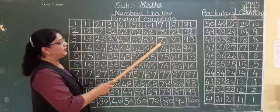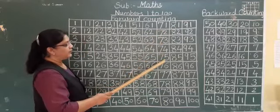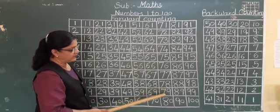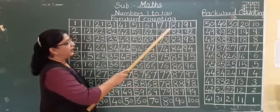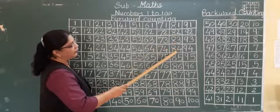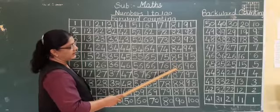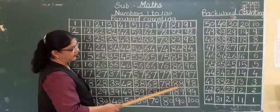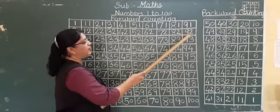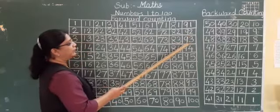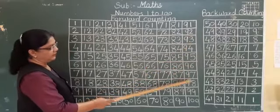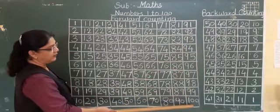71, 72, 73, 74, 75, 76, 77, 78, 79, 80. 81, 82, 83, 84, 85, 86, 87, 88, 89, 90. 91, 92, 93, 94, 95, 96, 97, 98, 99, 100.